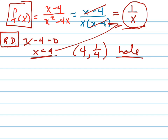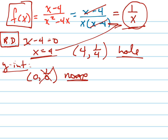The next step is to plot the y-intercept. I find that by plugging 0 in for x, but my y-intercept would be 1 over 0, which I can't do — so there's no y-intercept. For the x-intercept, I set the numerator equal to 0, but there's no way for 1 to equal 0, so there's no x-intercept either.